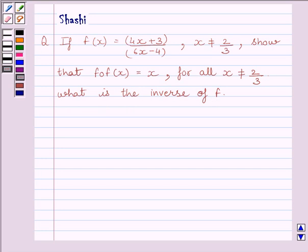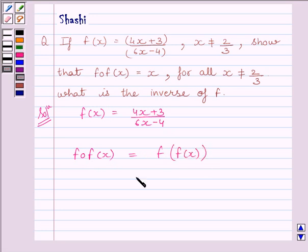Let's start with the solution. We are given f(x) equals (4x + 3)/(6x - 4). We have to find f(f(x)), which equals f of f(x). We will substitute for f(x) and get f of (4x + 3)/(6x - 4).